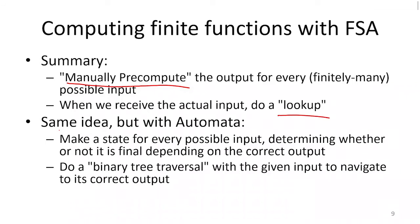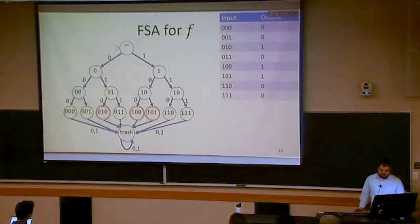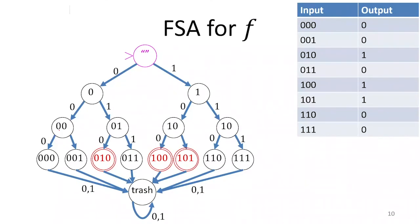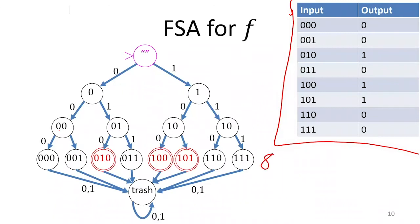We're going to do something very similar with finite state automata to handle any finite function. Just like before, we manually pre-compute all input-output pairs. But instead of a table, we do a lookup in a tree. I'll have one state for every possible input. Then, by looking at the table, I determine which states are final states — anything with output 1 should be a final state in that machine — and which are non-final states.